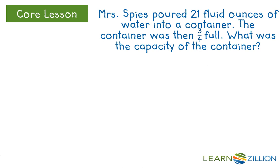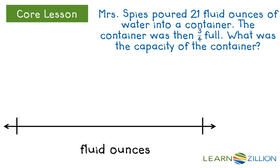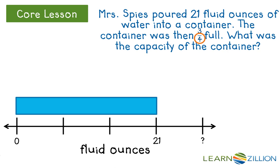Now this was just one type of diagram we could use to solve this problem. Let's look at one other type — we could have used a number line. Same problem, different diagram. I'm going to draw a number line that starts at zero and ends at a question mark, and then divide that number line into four sections, since the denominator tells me the total number of sections. I know that three-fourths of the container equals 21 fluid ounces, and the blue rectangle represents what's been filled so far.